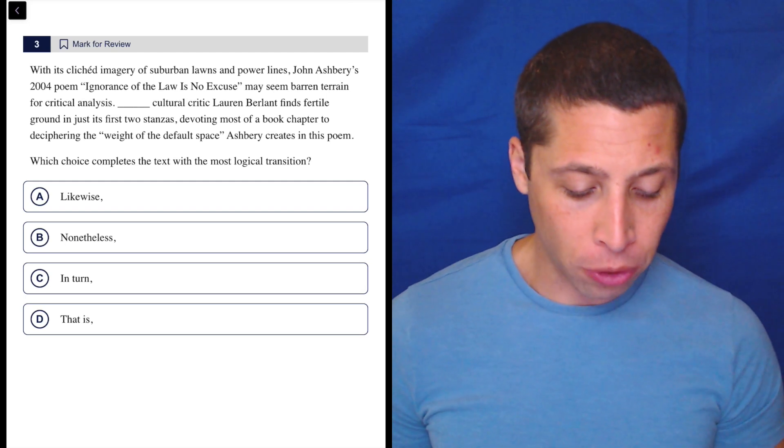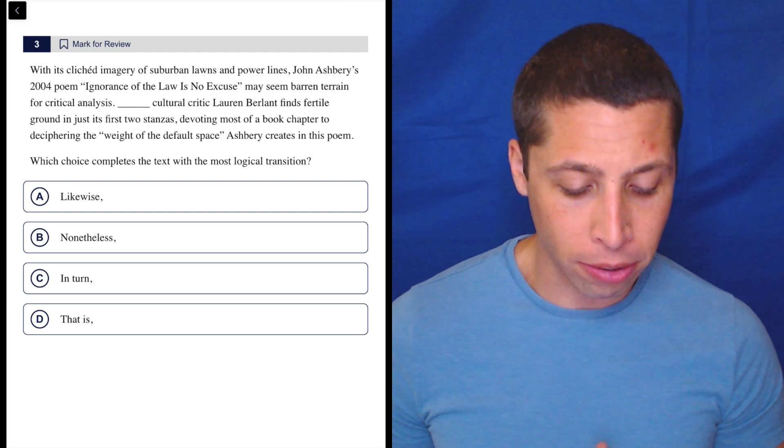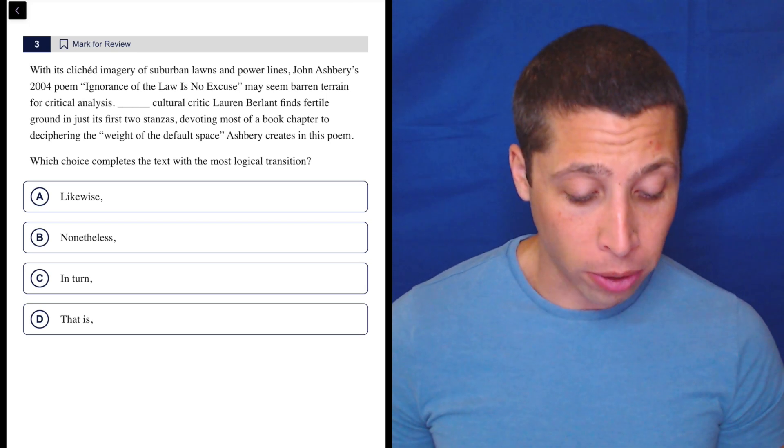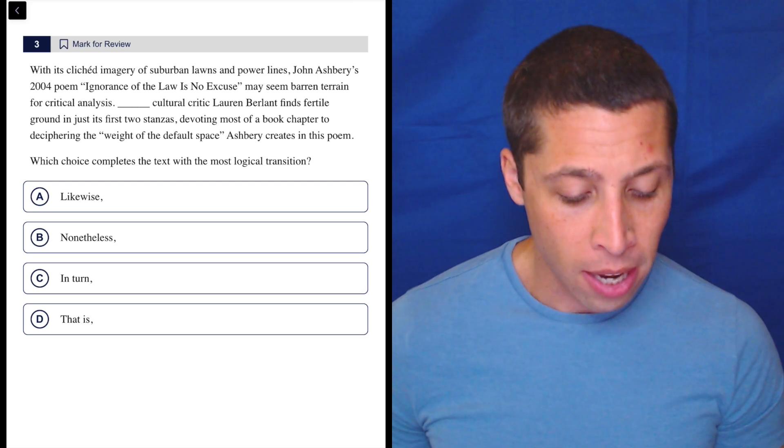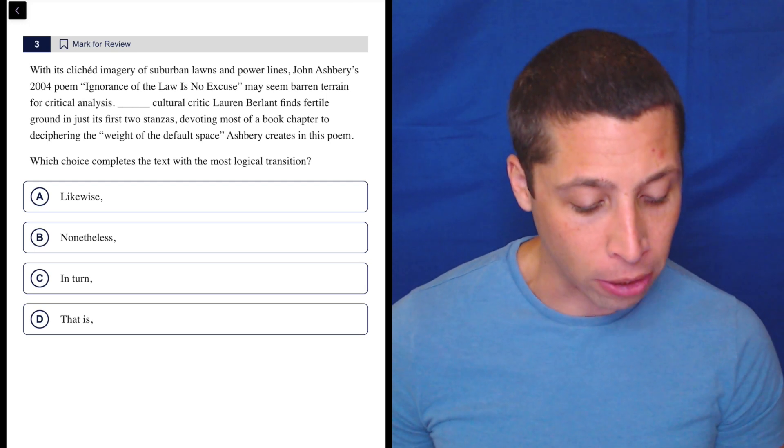With its cliched imagery of suburban lawns and power lines, John Ashbery's 2004 poem Ignorance of the Law is No Excuse may seem barren terrain for critical analysis. Cultural critic Lauren Berlant finds fertile ground in just its first two stanzas, devoting most of a book chapter to deciphering the weight of the default space Ashbery creates in this poem.